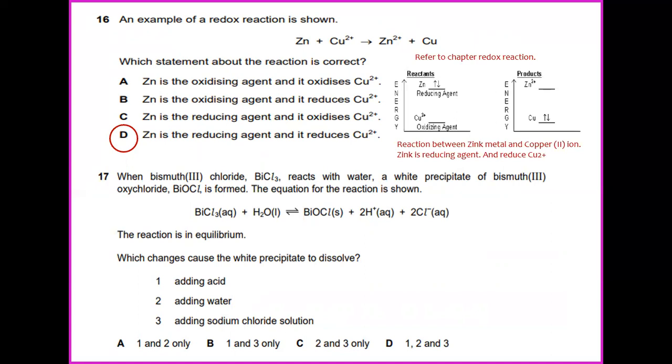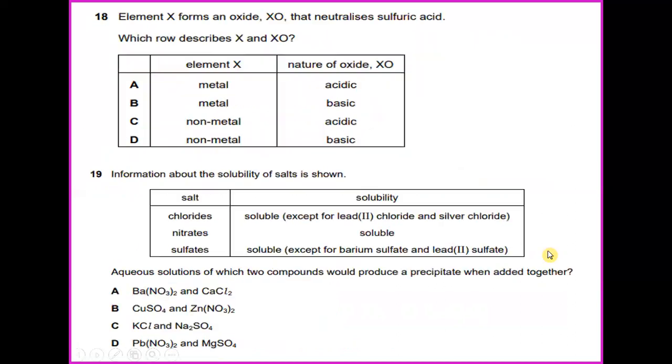When bismuth chloride reacts with water, a white precipitate of bismuth oxychloride is formed. The equation for the reaction is shown. The reaction is in equilibrium. Which change causes the white precipitate to dissolve? In this case, it says that by adding acid or adding sodium chloride solution, 1 and 3. So the answer would be B.